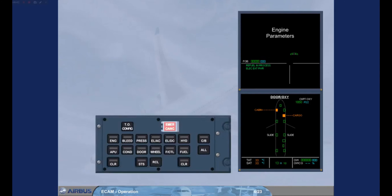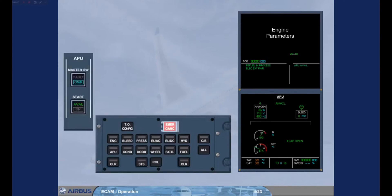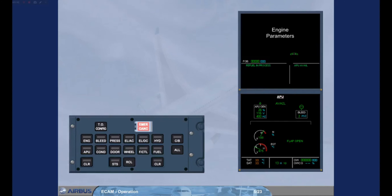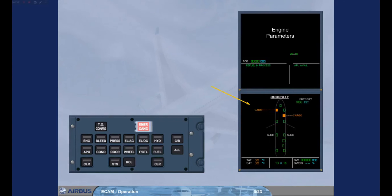The APU has been started, and the APU system page is automatically displayed. There is no light on the ECAM control panel APU key because the APU page has been automatically called as part of a normal sequence. The APU is now running. Once the APU has been started, the ECAM door Oxy page is automatically displayed. As the external power is no longer needed, we have disconnected it for you.